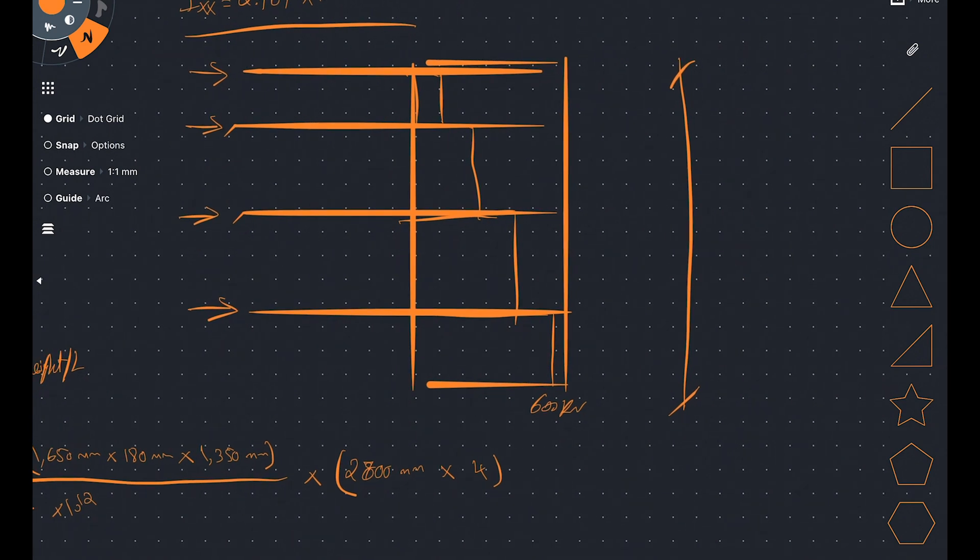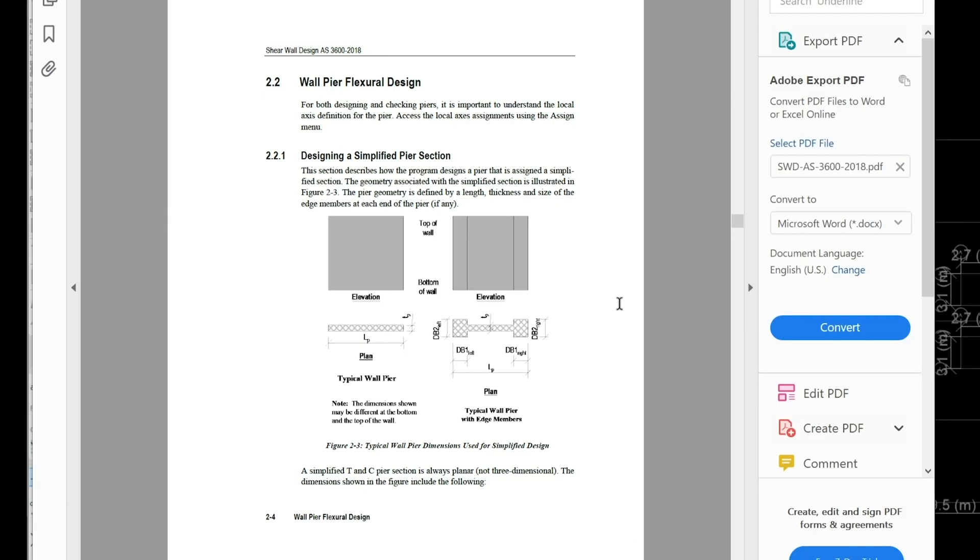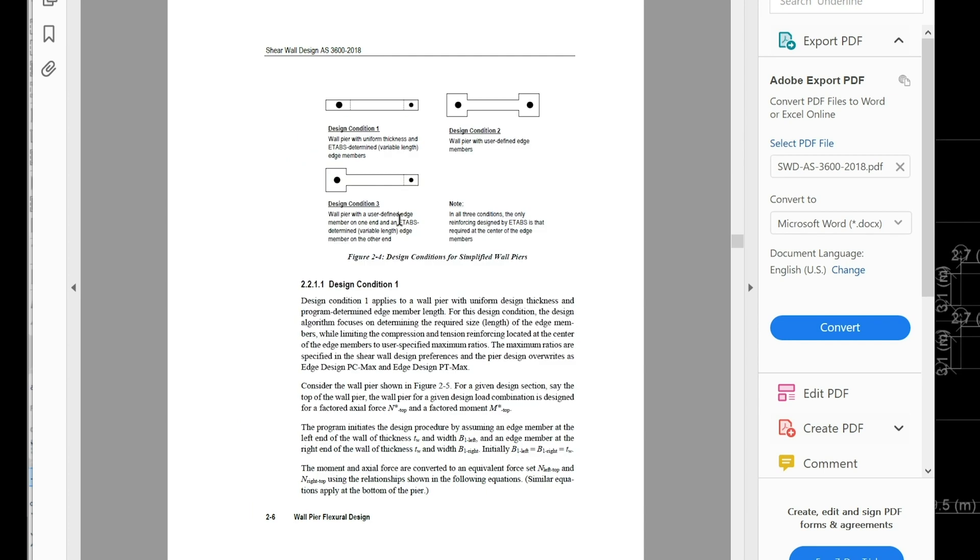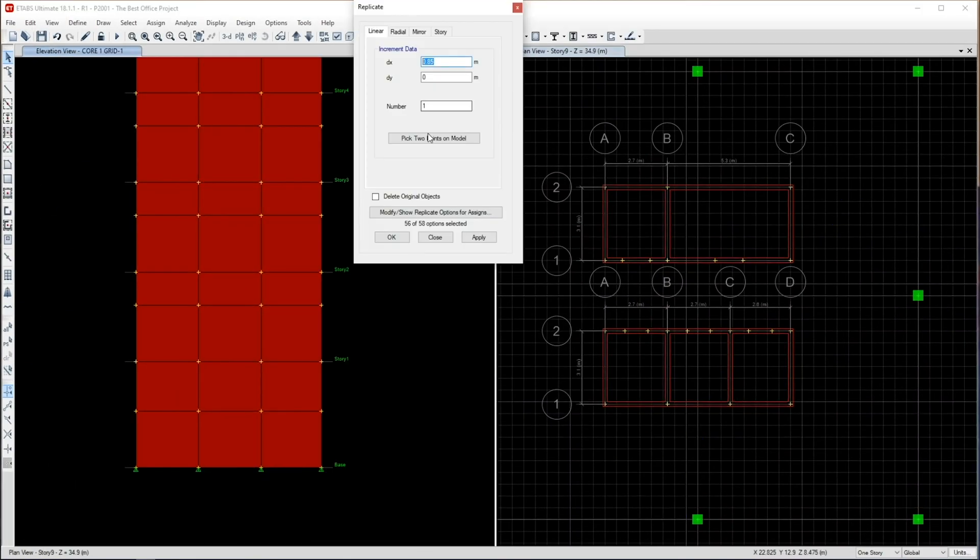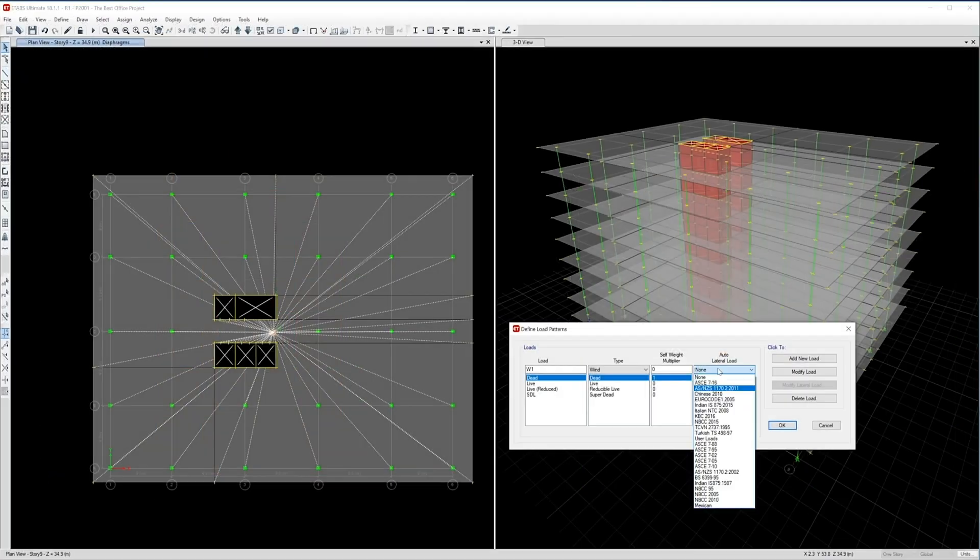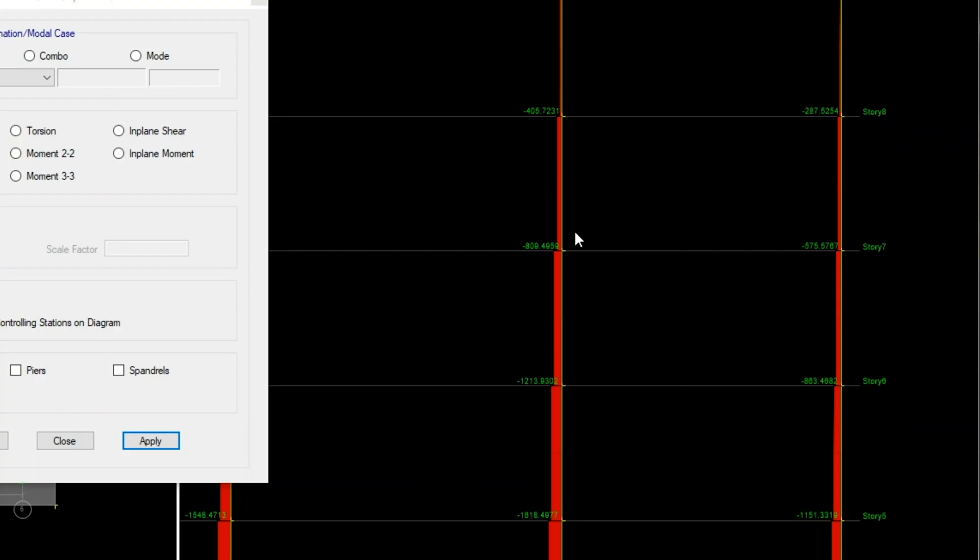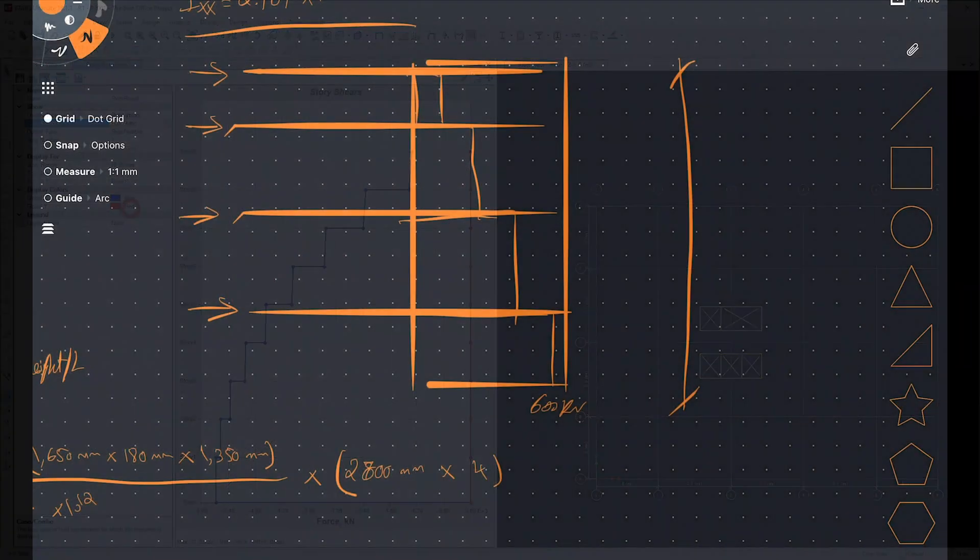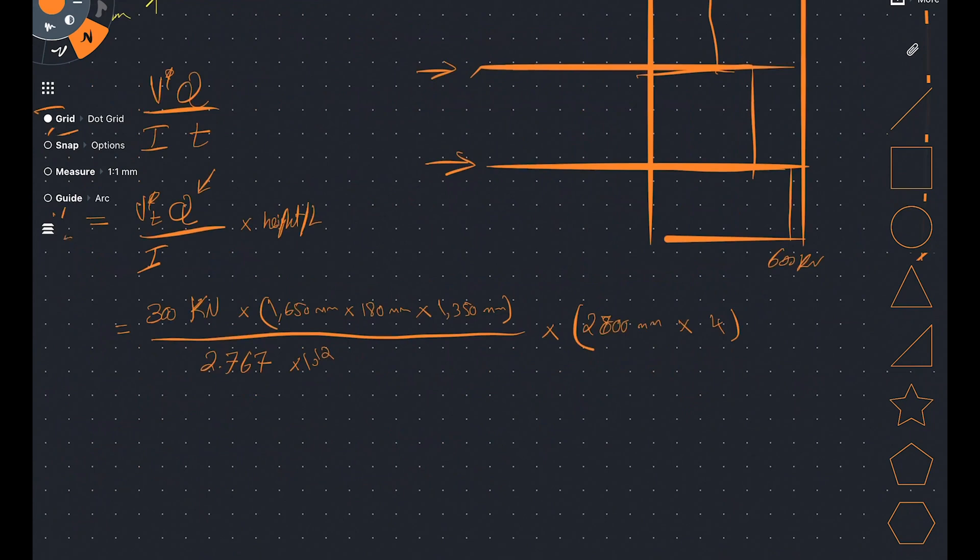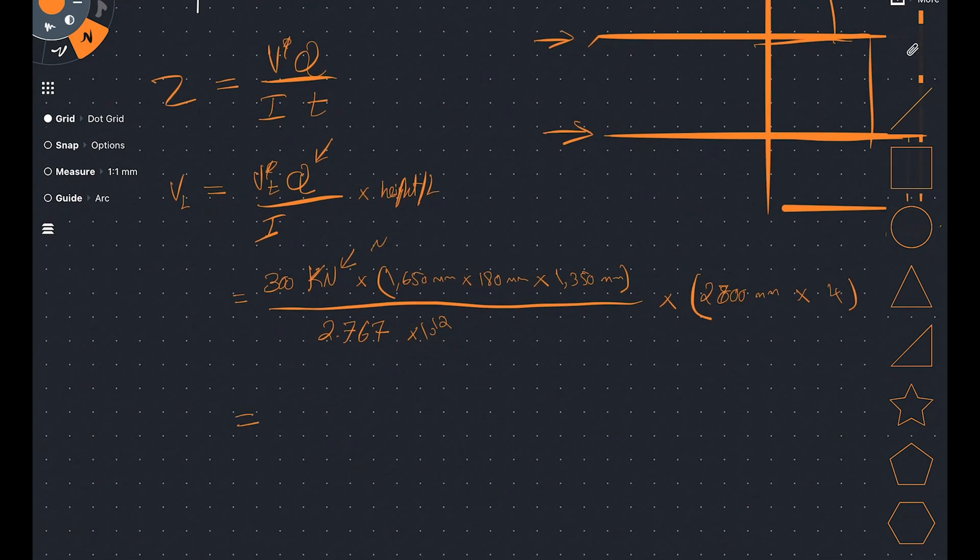That is my shear interface transferring all of my transverse shear into longitudinal shear. By the way, if you're interested in going deeper into lateral loads analysis and design, as well as modeling a complete building on the finite element analysis software called ETABS, check out the links in the description below. There is a full course on Udemy you can access with a heavily discounted price. If you work that out and convert this to newtons, you should be getting something like 487 kilonewtons. This 487 is the force I need to transfer at this joint.